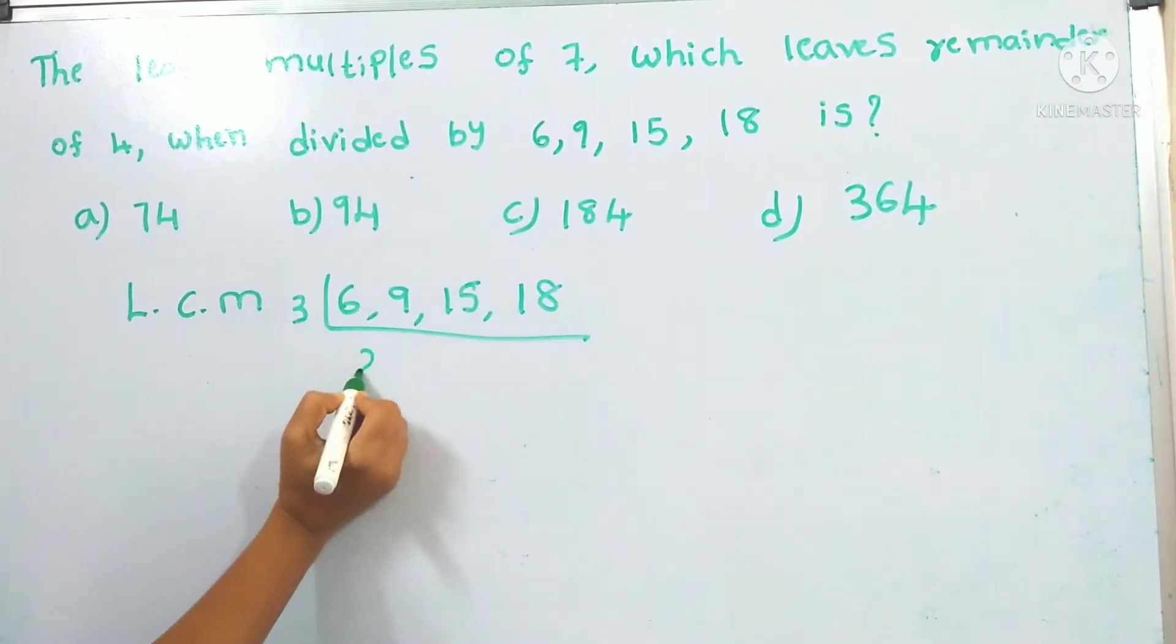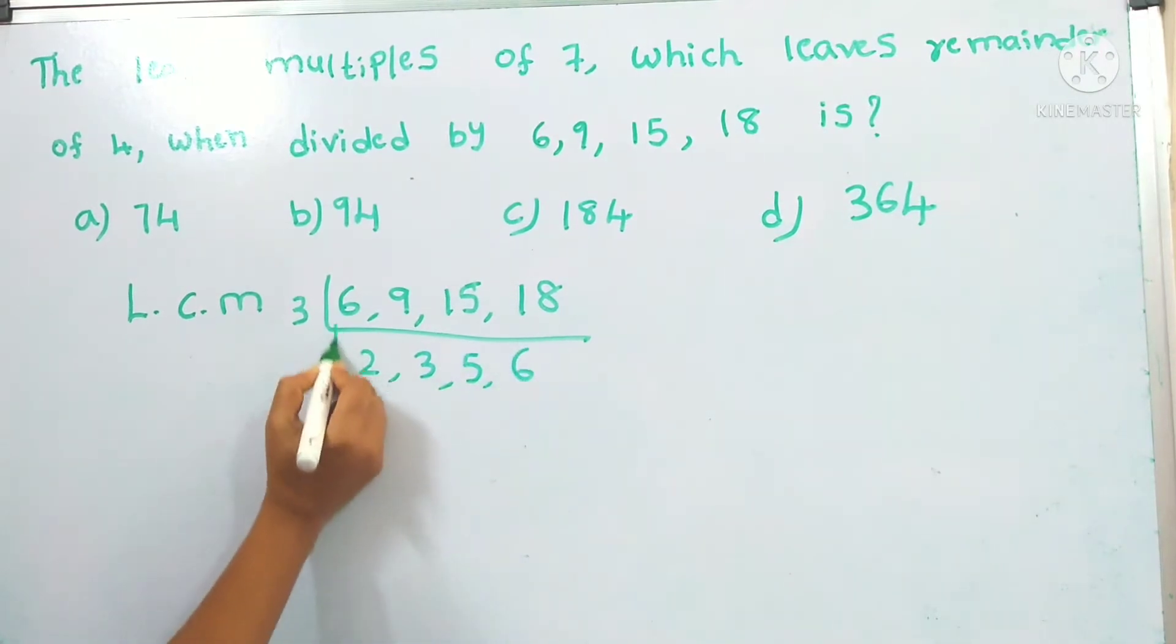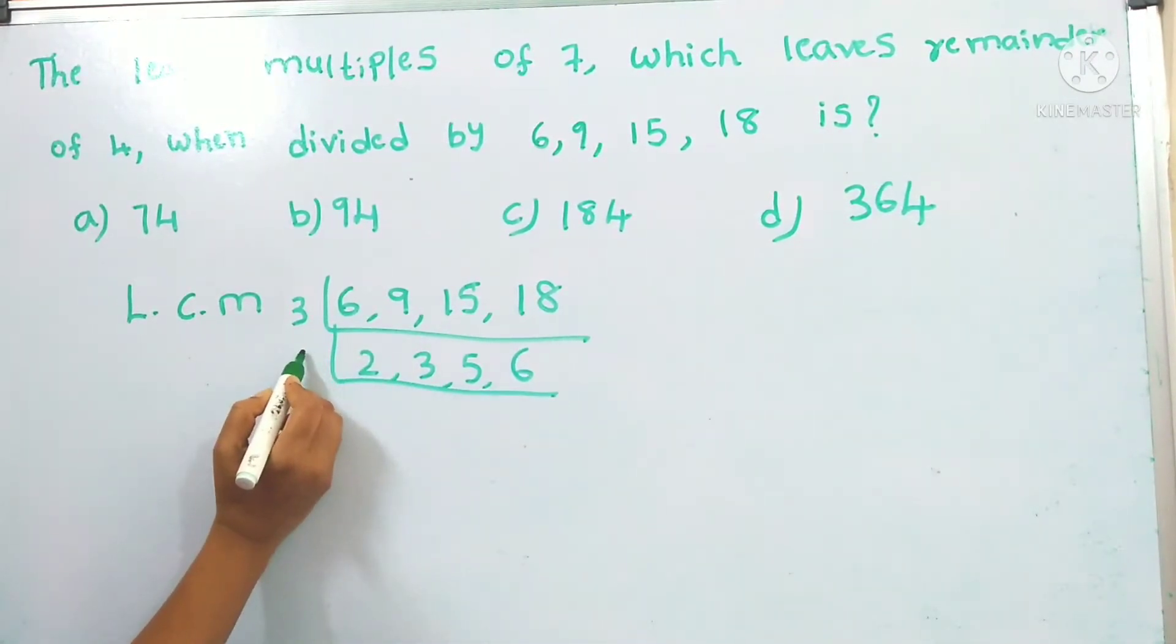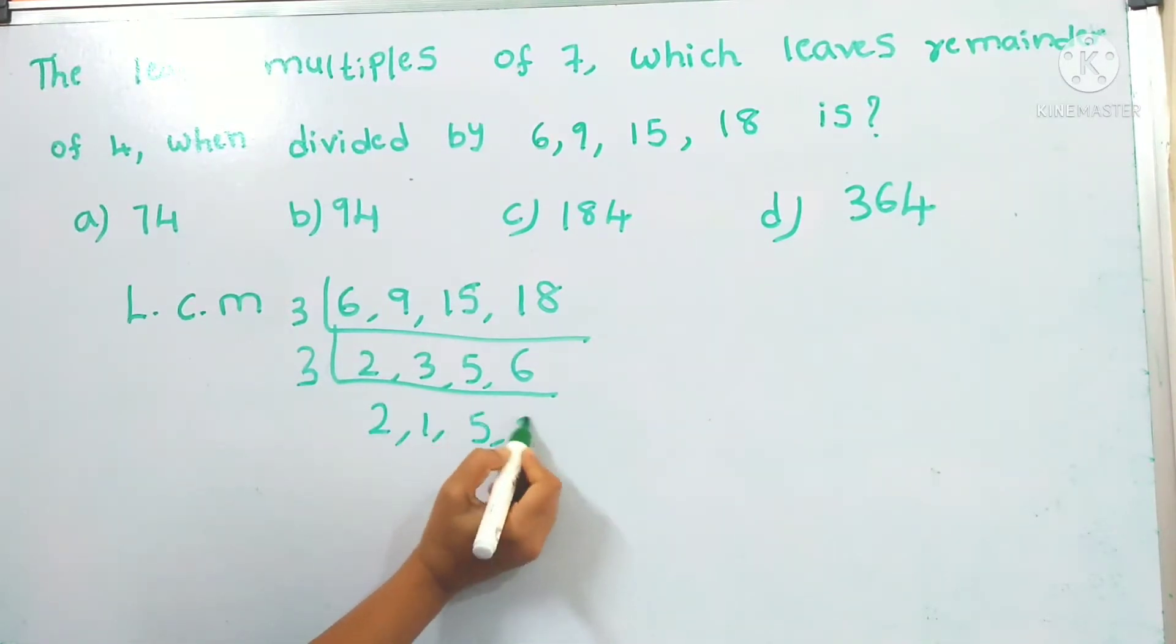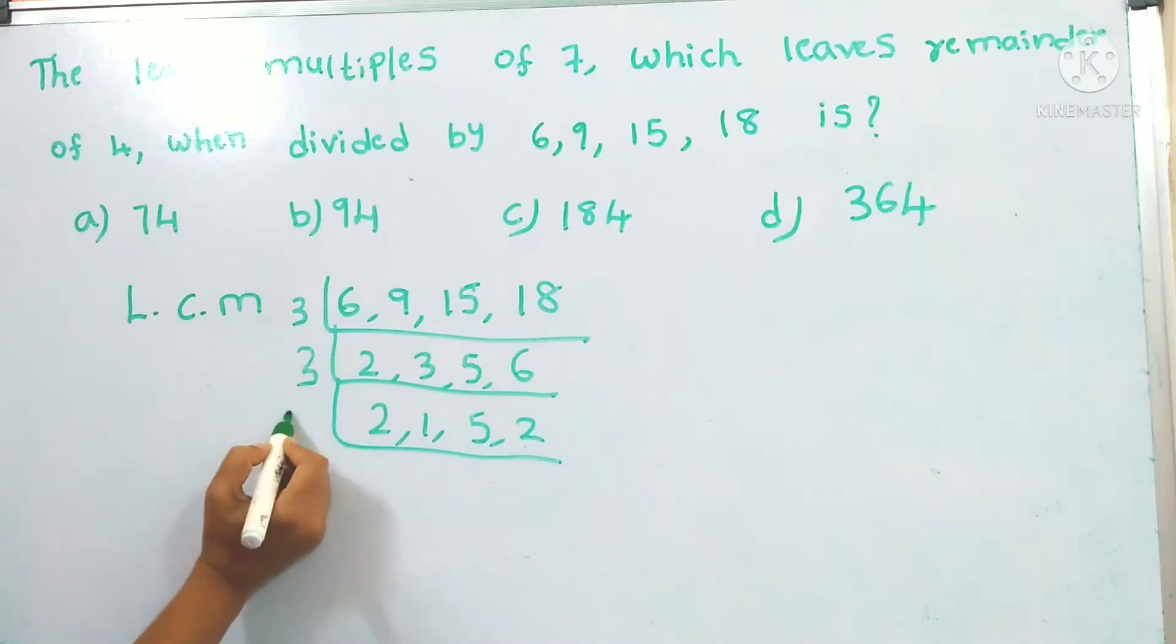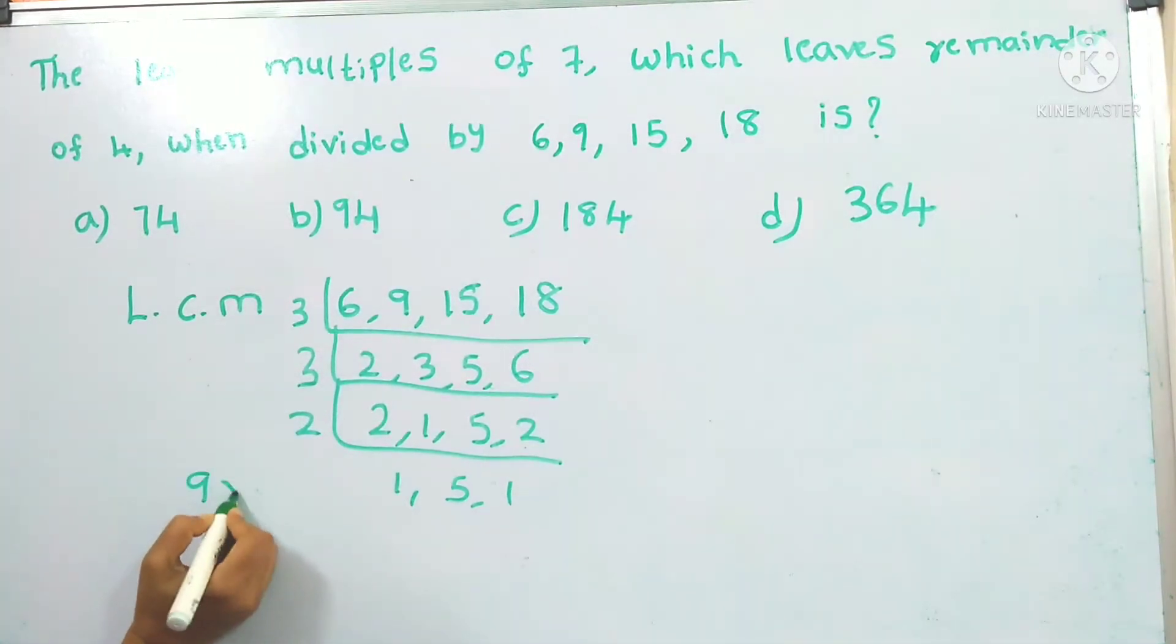3 times 2 is 6, and 3 times 3 is 9, 3 times 5 is 15, 3 times 6 is 18. Again in the 3 table, 3 times 1 is 3, 5, and 3 times 2 is 6. Again in the 2 table, 2 times 1 is 2, 5, and 2 times 1 is 2. So the LCM of these 4 numbers is 3 times 3 is 9 into 2 times 5 is 10, so it is 90. The LCM of these 4 numbers is 90.